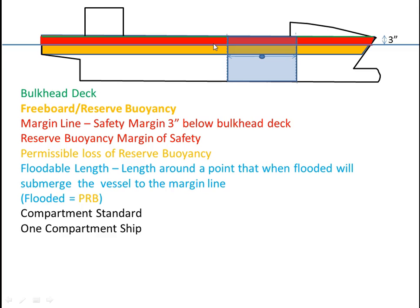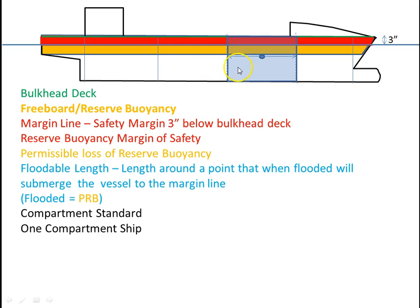If we put watertight transverse bulkheads in — here are several more, all more or less the same volume — this would be a one-compartment ship. We could flood any one of these and not sink the ship beyond the margin line. But if we flooded two compartments, we would be up to the bulkhead deck with no reserve buoyancy left. This is a one-compartment ship because we could flood one compartment and the vessel would still float with three inches of extra reserve buoyancy.